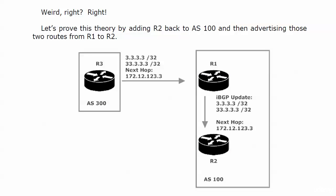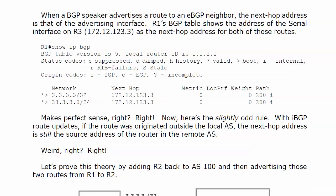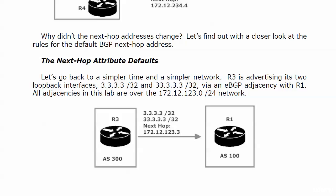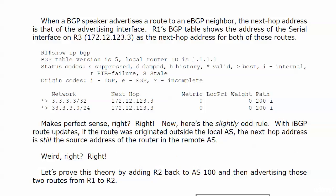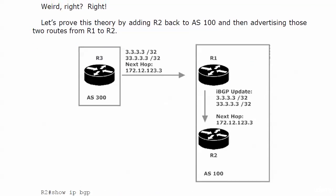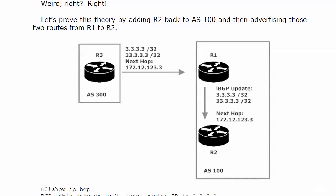This comes up a lot. If the two routers involved are external, the next-hop address is always going to be that of the advertising interface. But when a router has learned a route from an external neighbor and is then advertising it to an internal neighbor, the next hop remains intact — it doesn't change. In this lab, no big deal because Router 2 can reach 172.16.123.3. But as we saw in previous videos, if Router 2 can't reach that next-hop address, you're going to have problems.